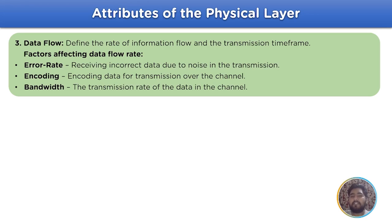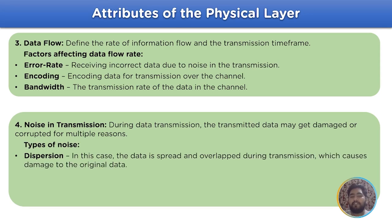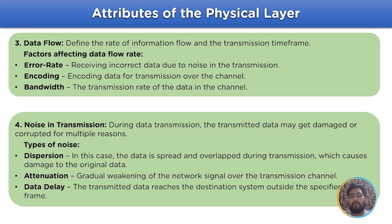The last attribute of the physical layer is noise in transmission. During data transmission, the transmitted data may get damaged or corrupted due to multiple reasons. Some of which are mentioned as dispersion. In this case, data is spread and overlapped during transmission which causes damage to the original data. Then we have attenuation which is the gradual weakening of the network signal over the transmission channel. Then we have data delay, the transmitter's data reaches the destination system outside the time specified.